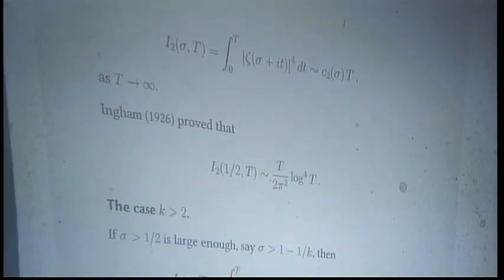When k equals two, if you're to the right of one-half, the mean fourth power is another constant times T. Ingham proved that on the half line it's T over 2π squared times log to the fourth T. If k is bigger than two, we don't have an asymptotic on the half line, and we don't have one if you're too close to the half line. But if you move a little bit away — depending on how big k is — then again a constant times T is the correct answer.